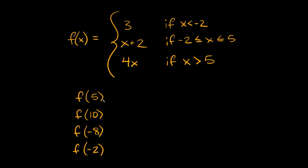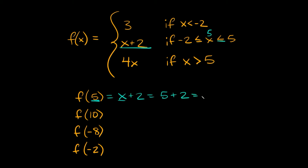Let's do f of 5. So where does 5 fit into these three descriptions? Is 5 less than negative 2? No, because 5 is bigger than negative 2, so it doesn't fit the first description. What about the second one? Is 5 between negative 2 and 5? Yes — specifically, 5 is less than or equal to 5. So positive 5 fits the second description, and we use x plus 2. So f of 5 equals x plus 2, and plugging in 5 gives us 5 plus 2.